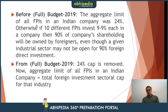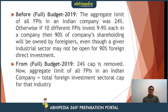In the full budget of 2019 — there was a partial budget and then a full budget in July — before the full budget, the aggregate limit of all FPIs in an Indian company was capped at 24%. However, if 10 different foreign portfolio investors each invested 9% in a company, that would go up to 90% shareholding owned by foreigners, even if a given industrial sector is not open for 90% foreign direct investment.